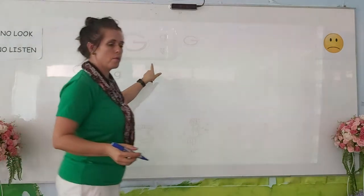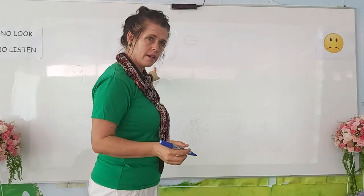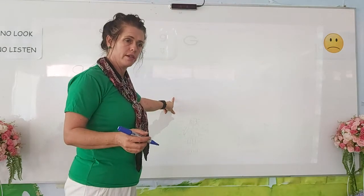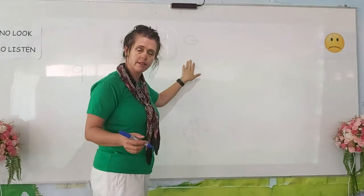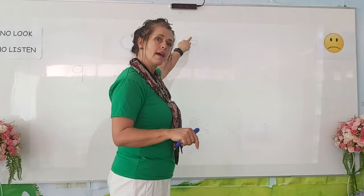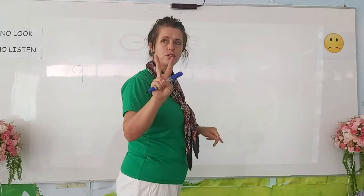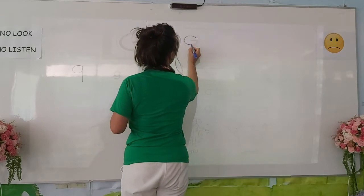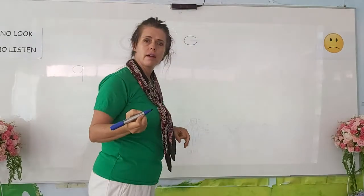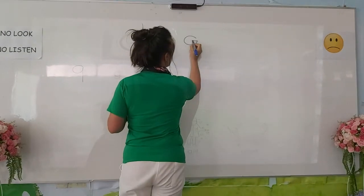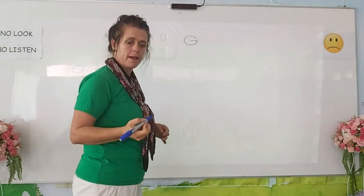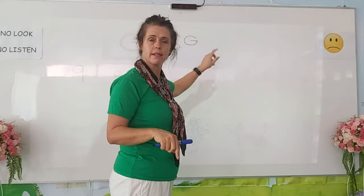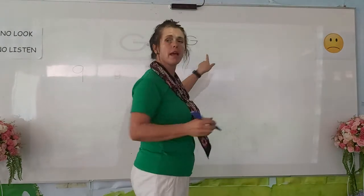We are doing the letter G — the capital G and the lowercase G. Let's trace the G. The capital G has two steps: step one and step two. Now trace your capital G.